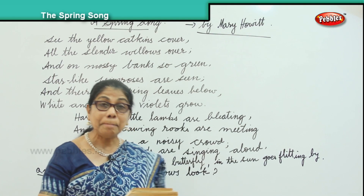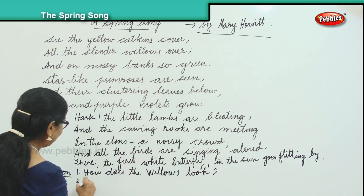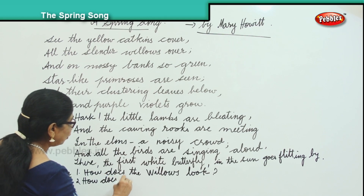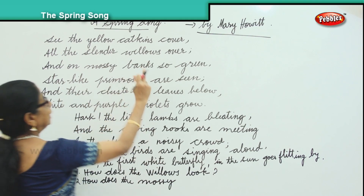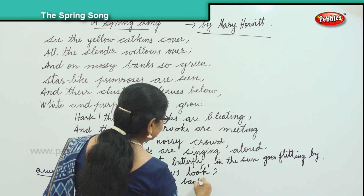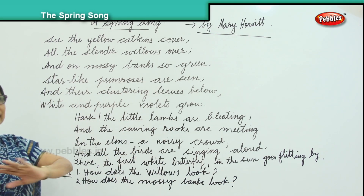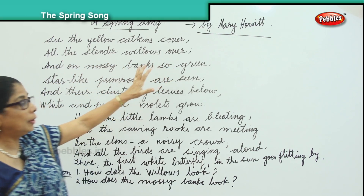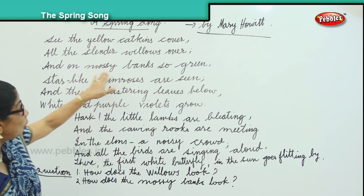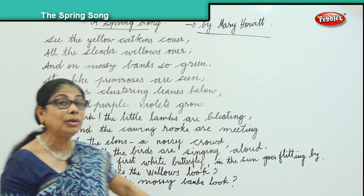How do the mossy banks look? The mossy banks look green, because of the moss that is formed, the place looks green. 'And on mossy banks' — the mossy banks look green. So, how do the mossy banks look? They look green.